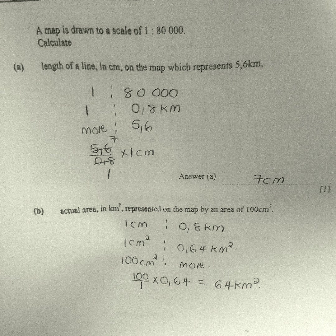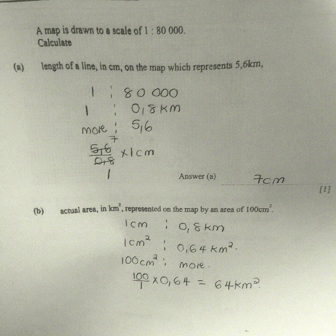We divide 80,000 by 100,000 to get 0.8 kilometers. So 1 centimeter represents 0.8 kilometers. What about 5.6 kilometers? It is going to be more, so we say 5.6 divided by 0.8 times 1 centimeter in order to get 7 centimeters.